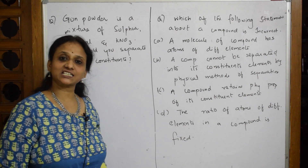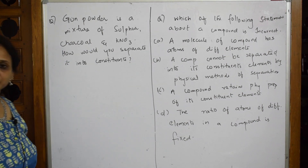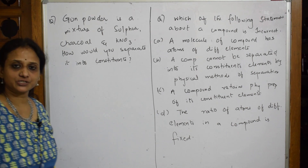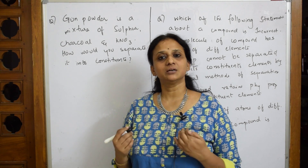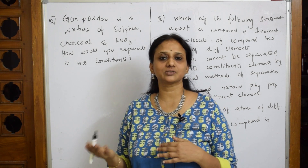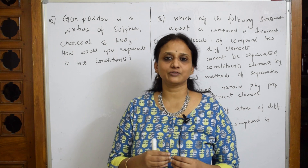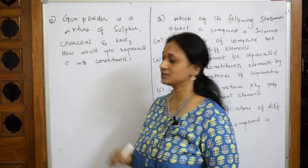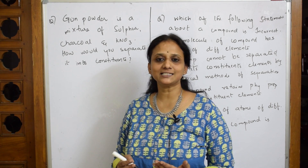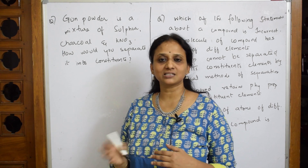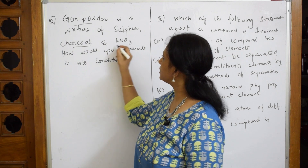Now let's do the next question. Gunpowder is a mixture of sulfur, charcoal, and potassium nitrate — how would you separate it into its constituents? Till now we've only studied elements, mixtures, compounds, homogeneous, and heterogeneous. Now let's go to a next level of understanding. Whenever a mixture is given, you should know the solubility of its components.